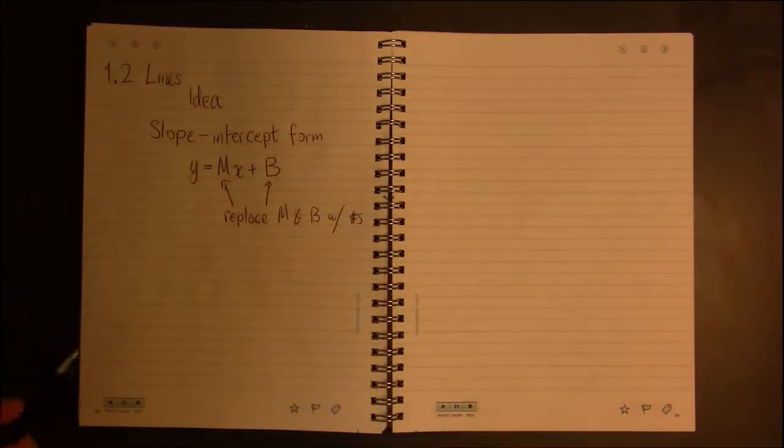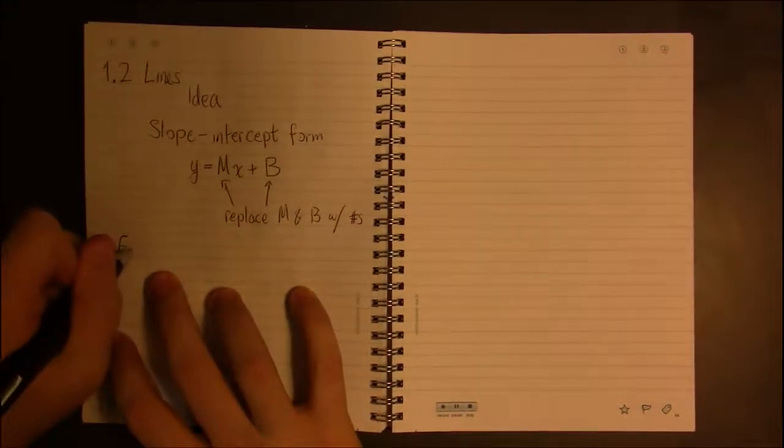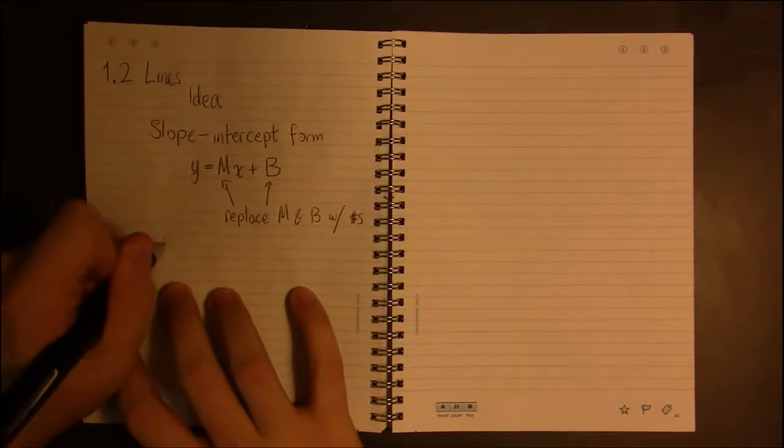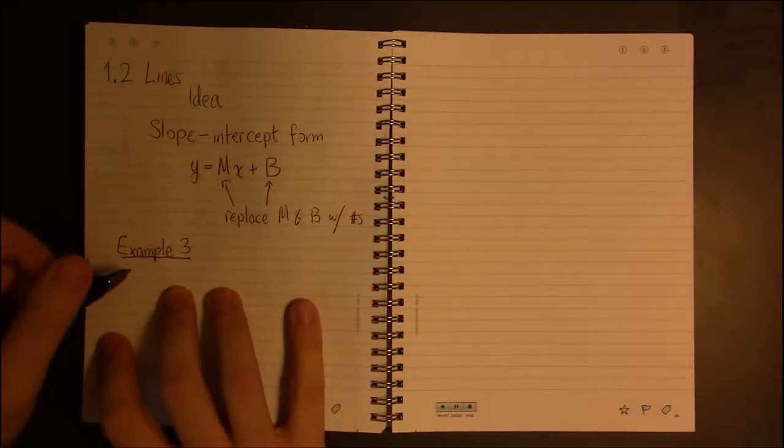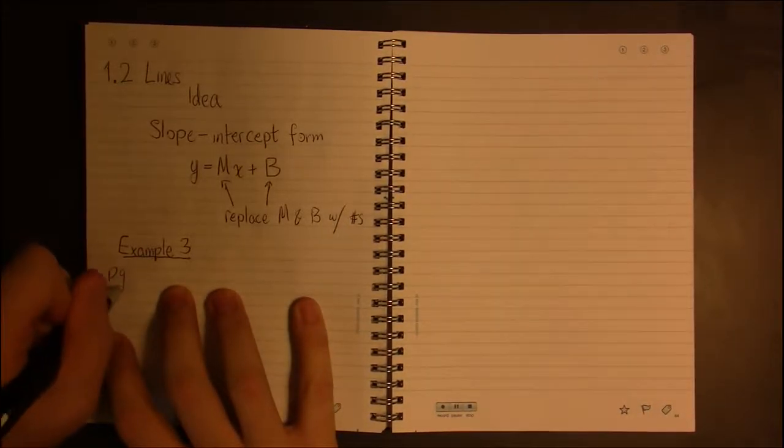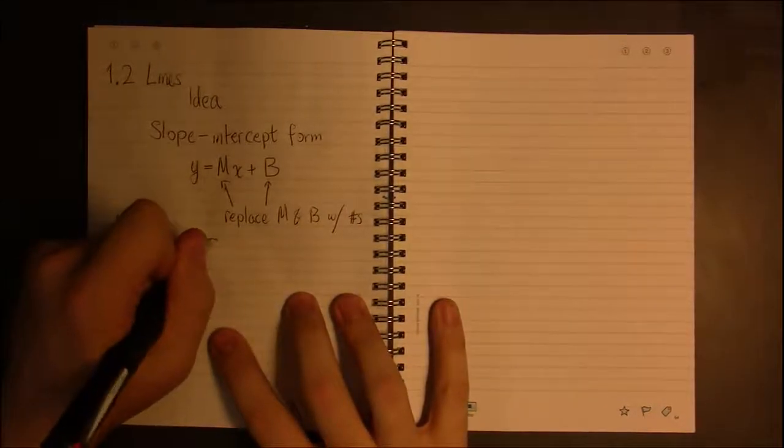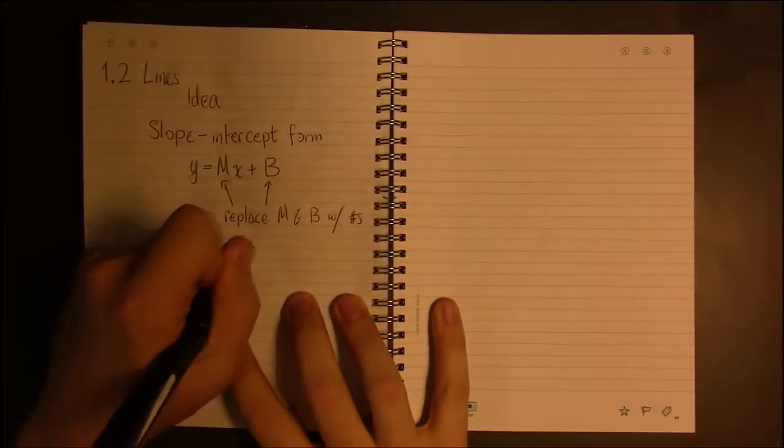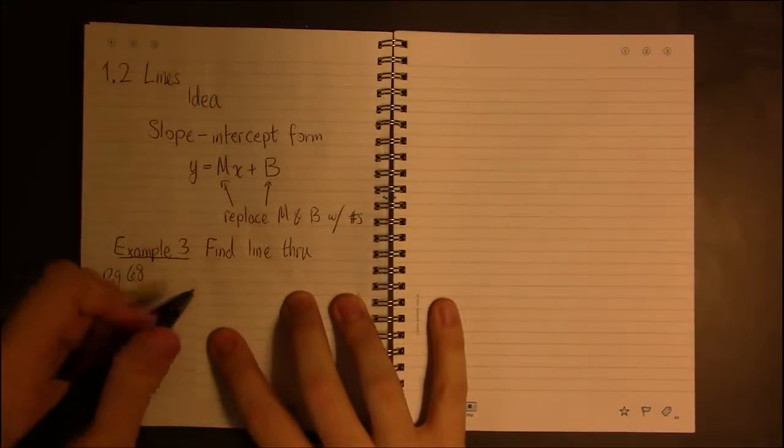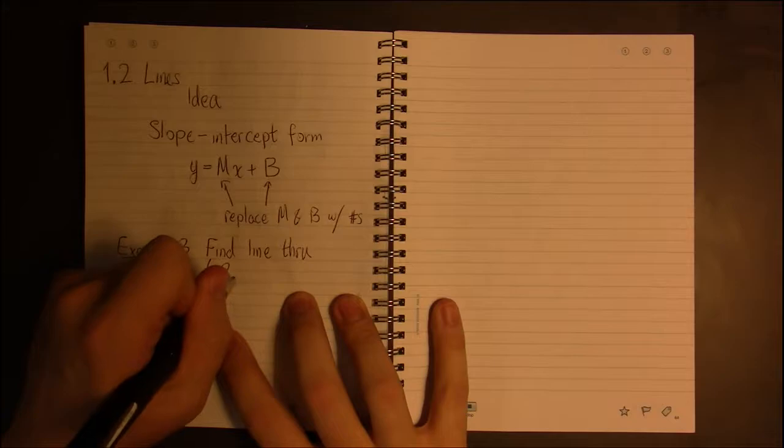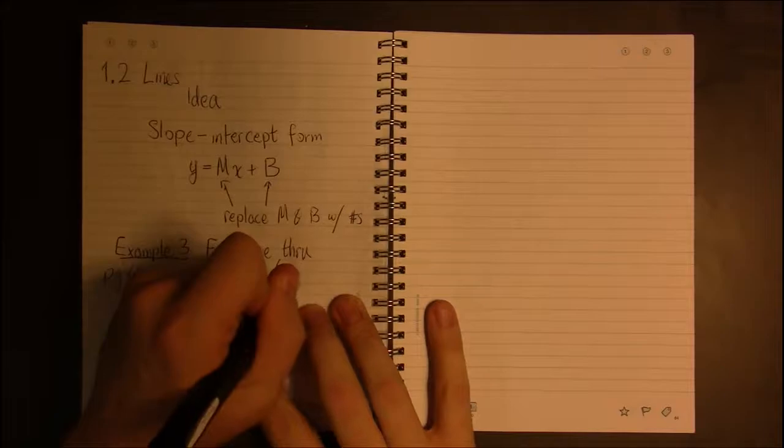So, for example, in example 3 of this section, this is on page 68, we're supposed to find the line that passes through two points, (-2, 1) and (3, 7).